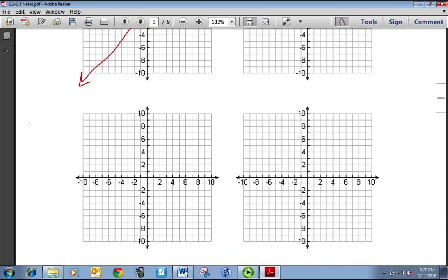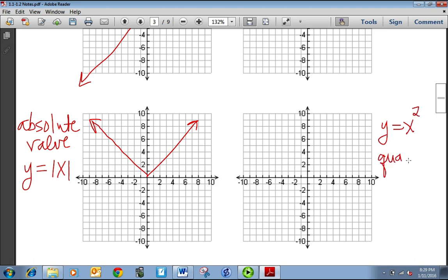The absolute value. That function would look like something like y equals absolute value of x. And it's sort of like a v shape with a point in the middle. Alright, quadratic. Most of us are familiar with quadratic, like y equals x squared. And this one, it's more like a u. It has a nice smooth point in the middle, not a pointy one.